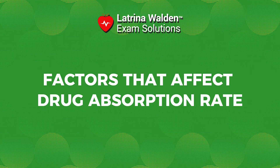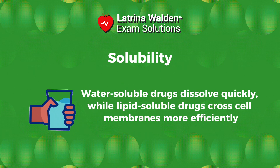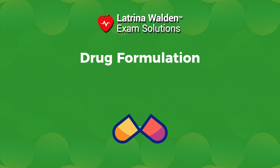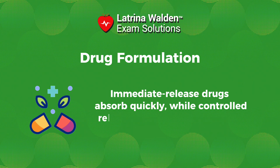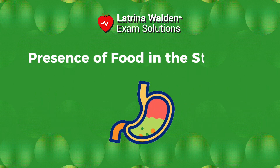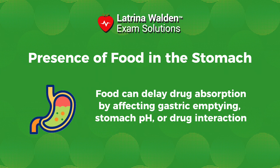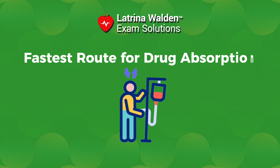What factors affect drug absorption rate? Solubility: water-soluble drugs dissolve quickly, while lipid-soluble drugs cross cell membranes more efficiently. Drug formulation: immediate-release drugs absorb quickly, while controlled-release drugs absorb gradually. Presence of food in the stomach: food can delay drug absorption by affecting gastric emptying, stomach pH, or drug interaction, influencing whether to take a medication with or without food.